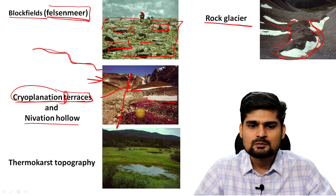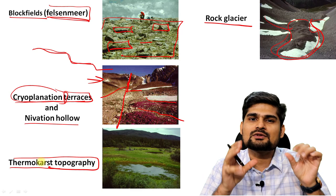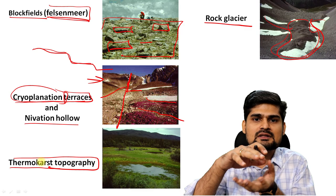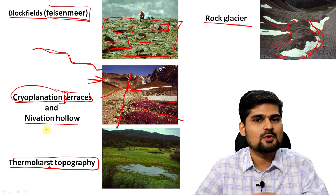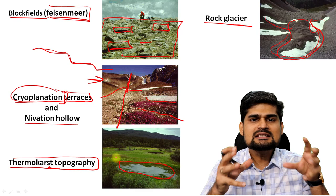Then you have thermokarst topography. In the karst landscape we also talked about thermokarst. In areas where nivation happens within the surface or in the substrate below the ground, you find this kind of thermokarst topography. When exposed, they look like pools of water in the season. These are some of the important landforms resulting from the processes observed in periglacial regions.